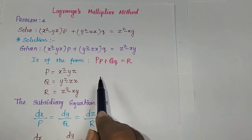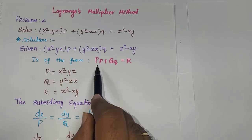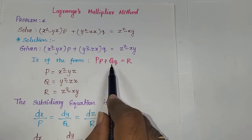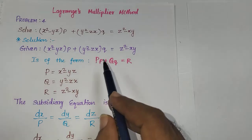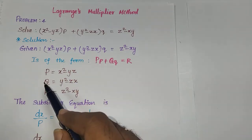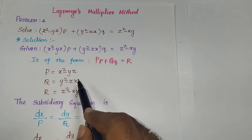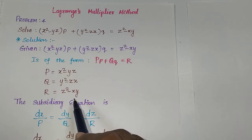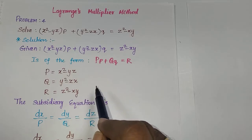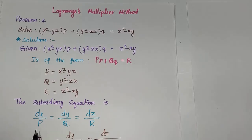I am going to compare this with the general Lagrange's linear equation: capital P times small p plus capital Q times small q equals R. Comparing, we get capital P = x² - yz, capital Q = y² - zx, capital R = z² - xy. After this we write the subsidiary equation: dx/P = dy/Q = dz/R.